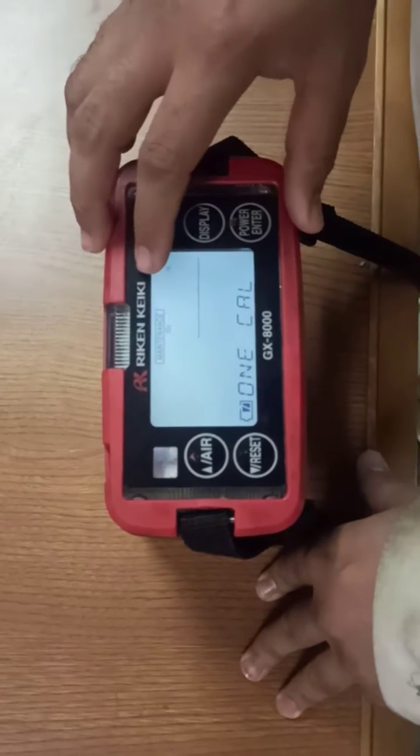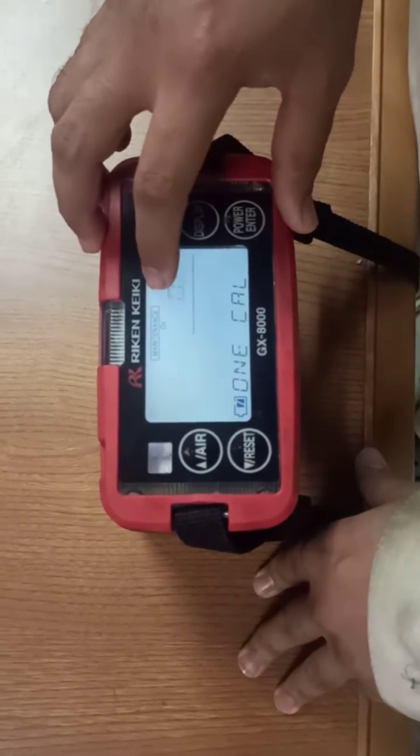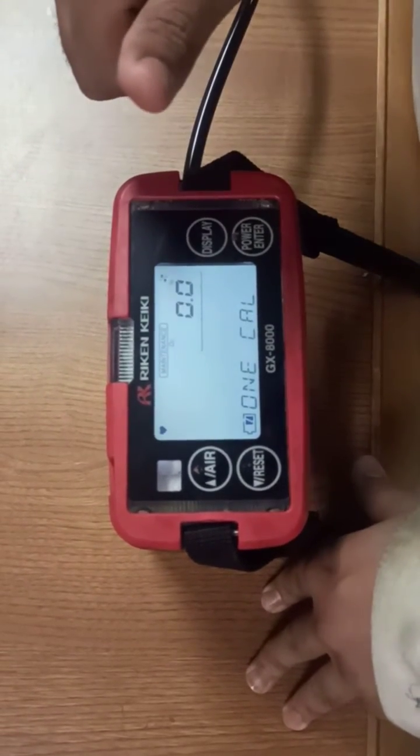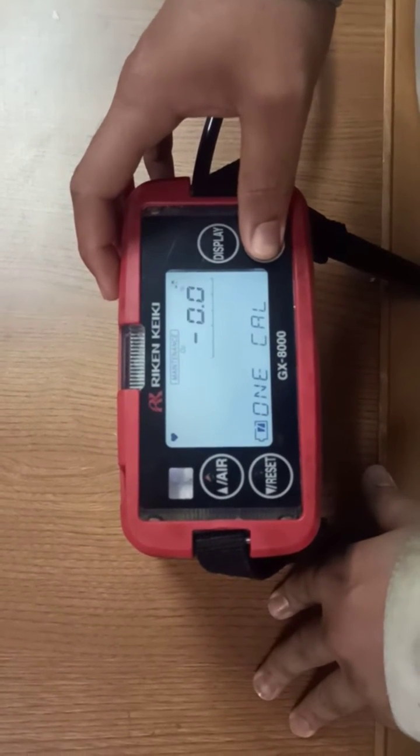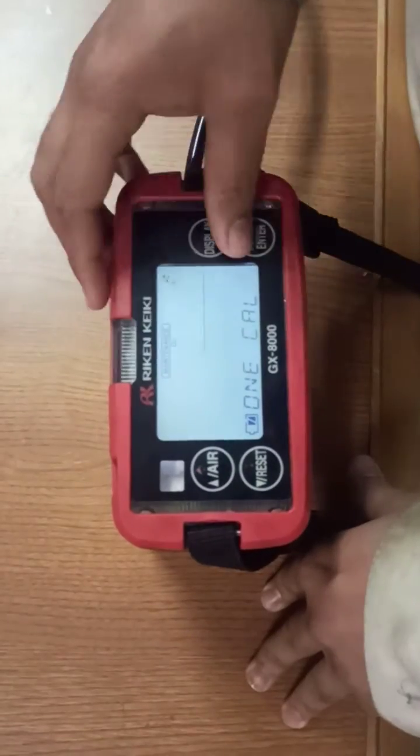As we can see, it is showing 0.0 percentage of O2, so the O2 sensor is okay and we have passed one calibration of the O2 sensor.